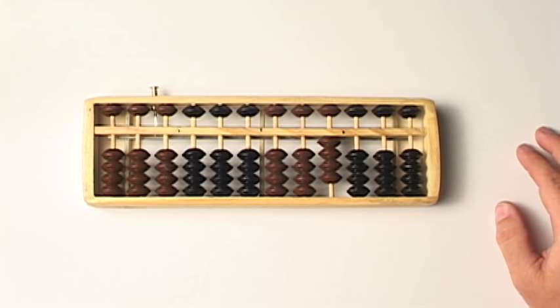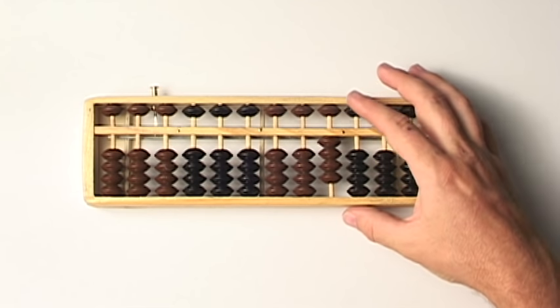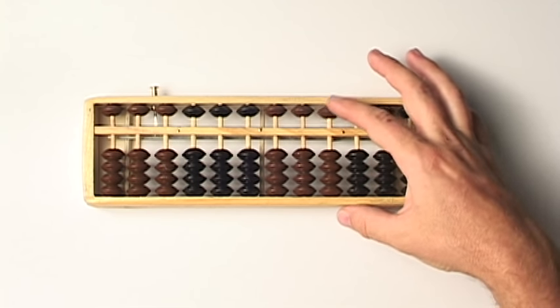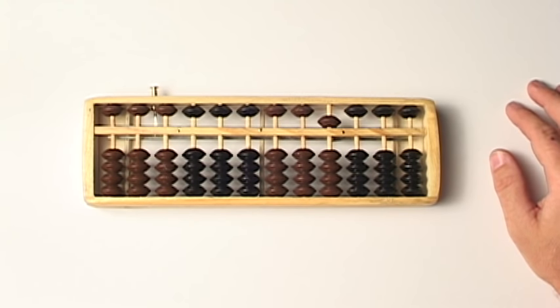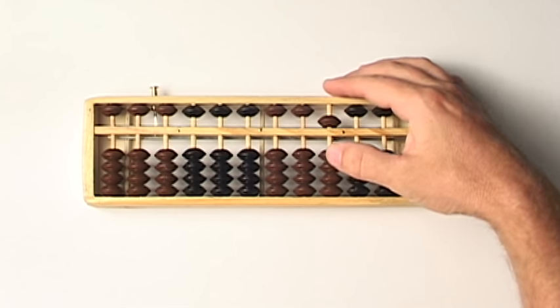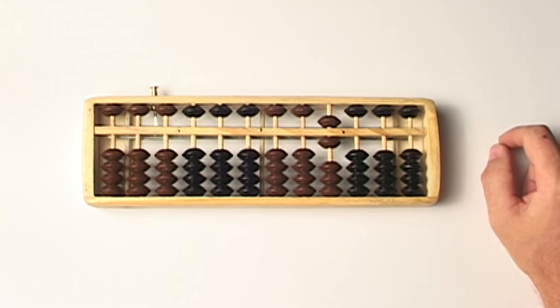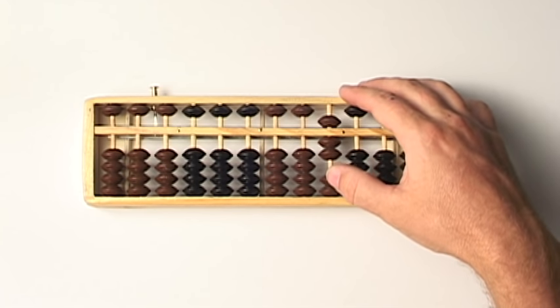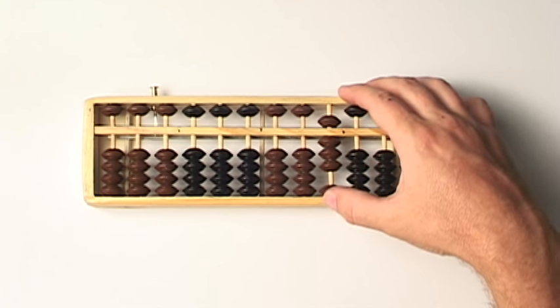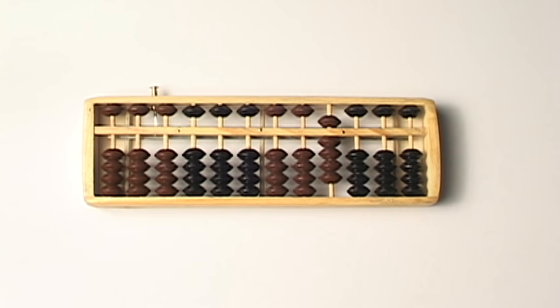Now remember, the top beads are worth five, and the bottom beads are worth one. So to do five, I do that. That is the number five on the abacus. And you may have guessed this already because we talked about it a little bit before. That's six, seven, eight, and nine. There we go. There is zero to nine on the abacus. Let's do it again.